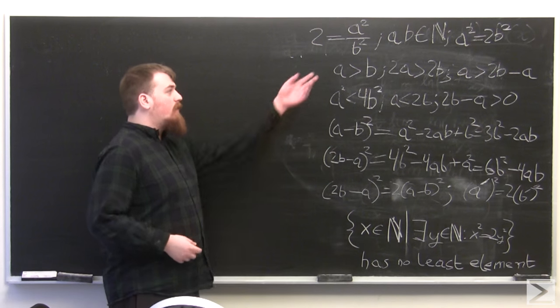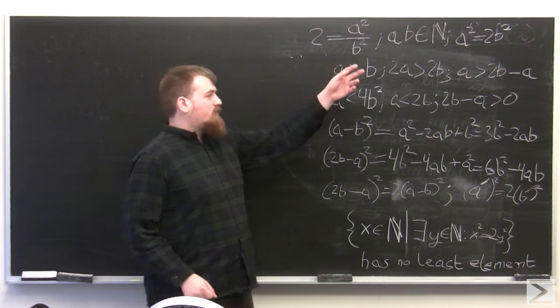If 2 is the square of some rational number a over b, then we'll have that a squared equals 2b squared.